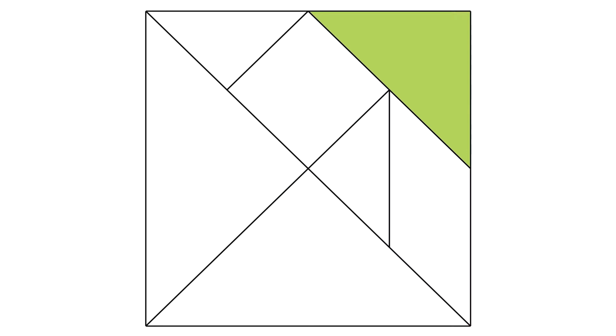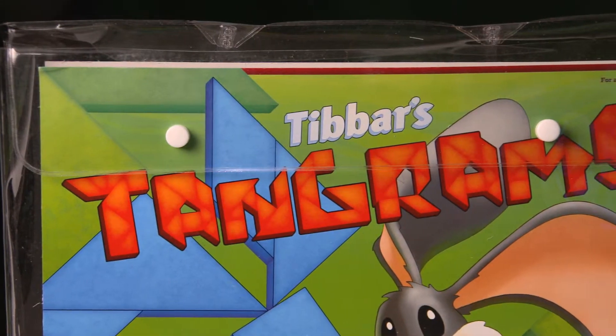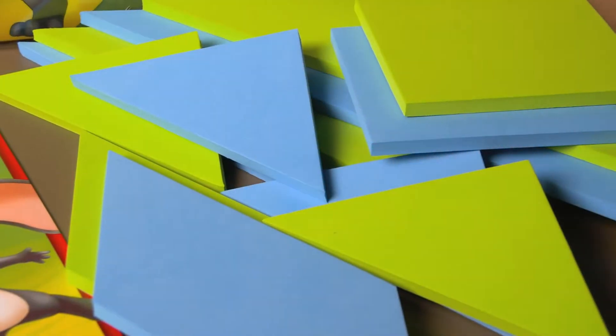A tangram is a set of seven geometric shapes that can be used to make thousands of objects. The portable clear carrying case contains two sets of tangrams: a green set and a blue set.